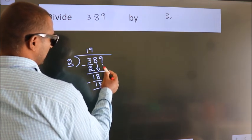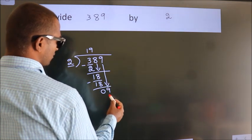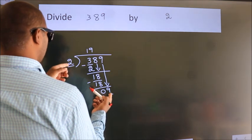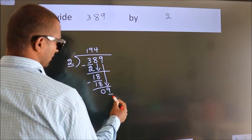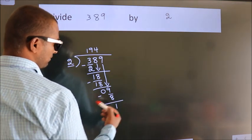After this, bring down the beside number. So, 9 down. So, 9. A number close to 9 in 2 table is 2 4s 8. Now, we subtract. We get 1.